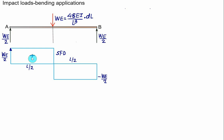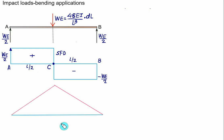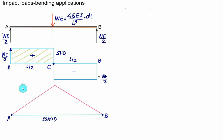The height of each rectangle in the SFD is We divided by 2, with length l/2 on each side since the load acts at mid-span. The shear force is positive at A and negative at B. At point C (midspan), the shear force changes sign from positive to negative, indicating maximum bending moment there. Maximum bending moment equals the area of the SFD rectangle, which is We times L divided by 4.